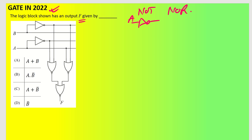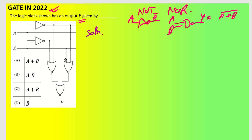So the expression is going to be A plus B whole bar for a NOR gate. Now let us solve this. We will find out what is the input at each point. If you see here, A is becoming Ā and B is becoming B̄. So Ā and B̄ are the inputs for the first NOR gate.